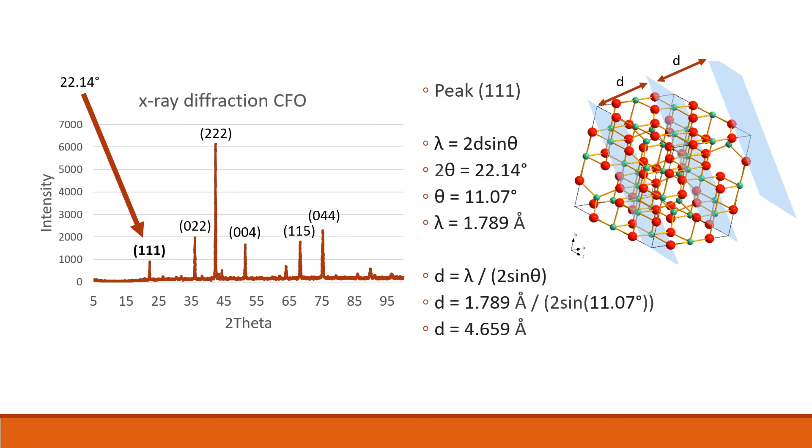Looking more closely at the first peak that's on the graph here, we have the plane 111, which is at the 2θ value of 22.14 degrees. So here we can use Bragg's law here, and notice that we have 2θ as 22.14 degrees, which allows us to find θ, which is 11.07 degrees.